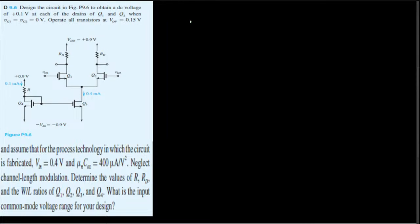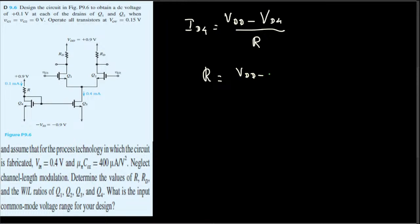Let's call this current ID4. ID4 equals VDD minus VD4, divided by R. Rearranging, R equals VDD minus VD4 divided by ID4. VDD is 0.9 V, but VD4 is the voltage at that node and we don't know it yet, so we need to find that voltage first.